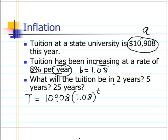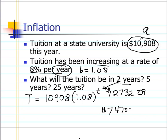If we calculate for two years by putting 2 in for t, we come up with $12,723.09 — that's our estimated cost in two years. If we put 25 in for t, we get a staggering amount of $74,703.17. So if the cost of tuition keeps increasing at this rate, you're going to have a real challenge trying to fund your children's college education in the future.